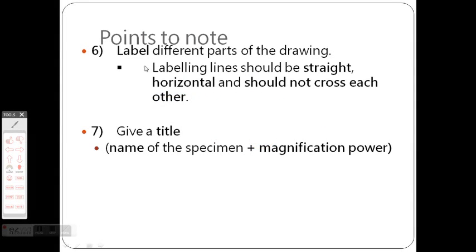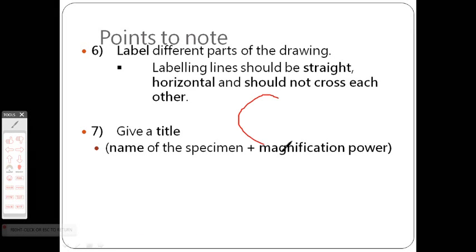The sixth point to note is that you have to label all parts. The labeling lines should be straight, horizontal, and should not cross each other. What does it mean, should not cross each other? Take an example, this is the cell. You label nucleus, then cytoplasm and so on. Here there is a cross. It is not beautiful to label things like this.